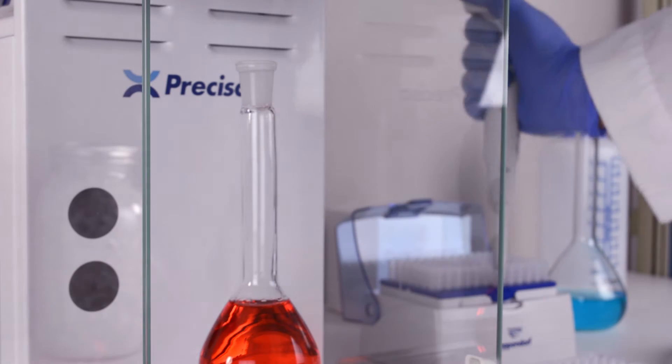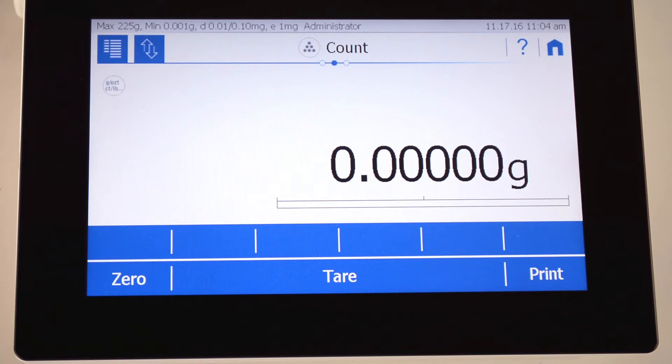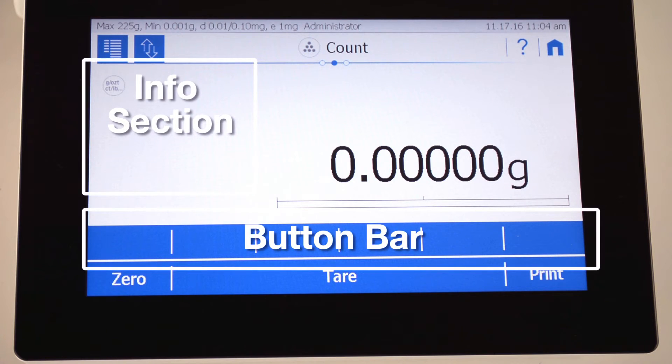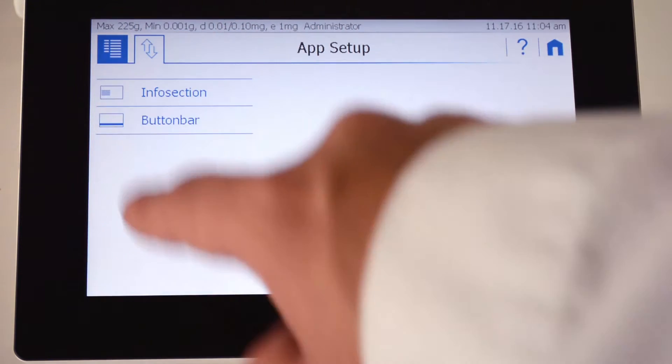Every user has completely different needs for their weighing applications. To cater to your application, the weighing screen has two customizable areas: the info section and the button bar. By tapping the button at the top of the screen, you can select presets to fill these areas for your specific application.